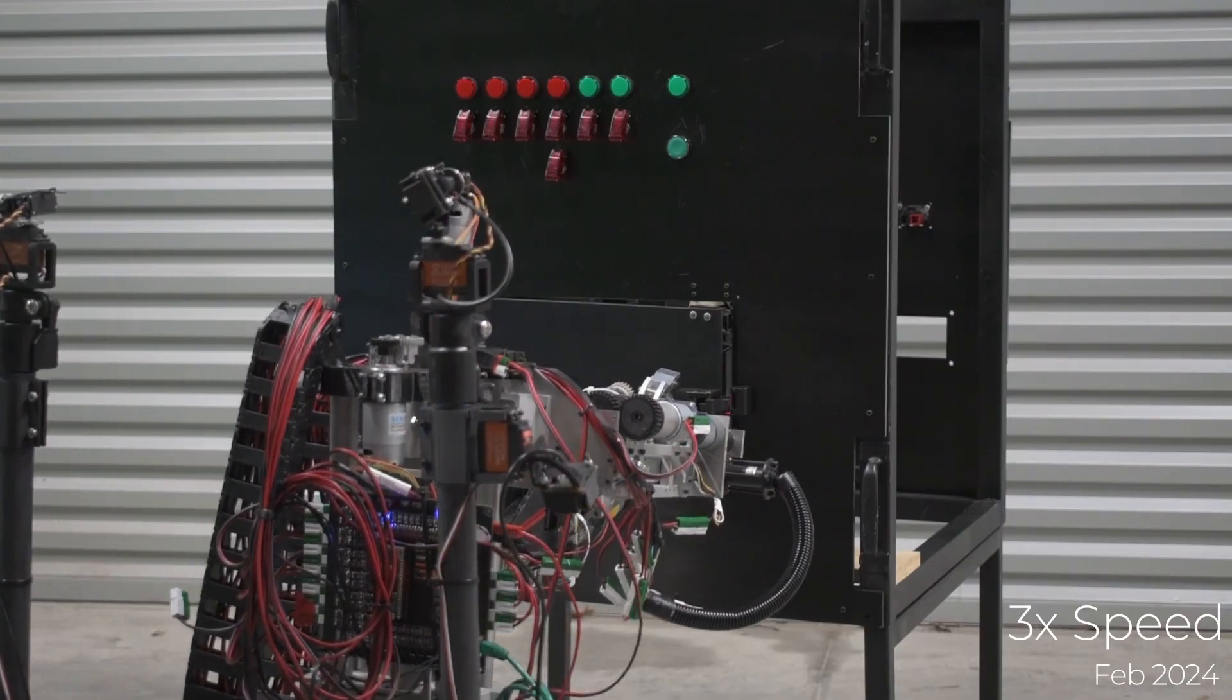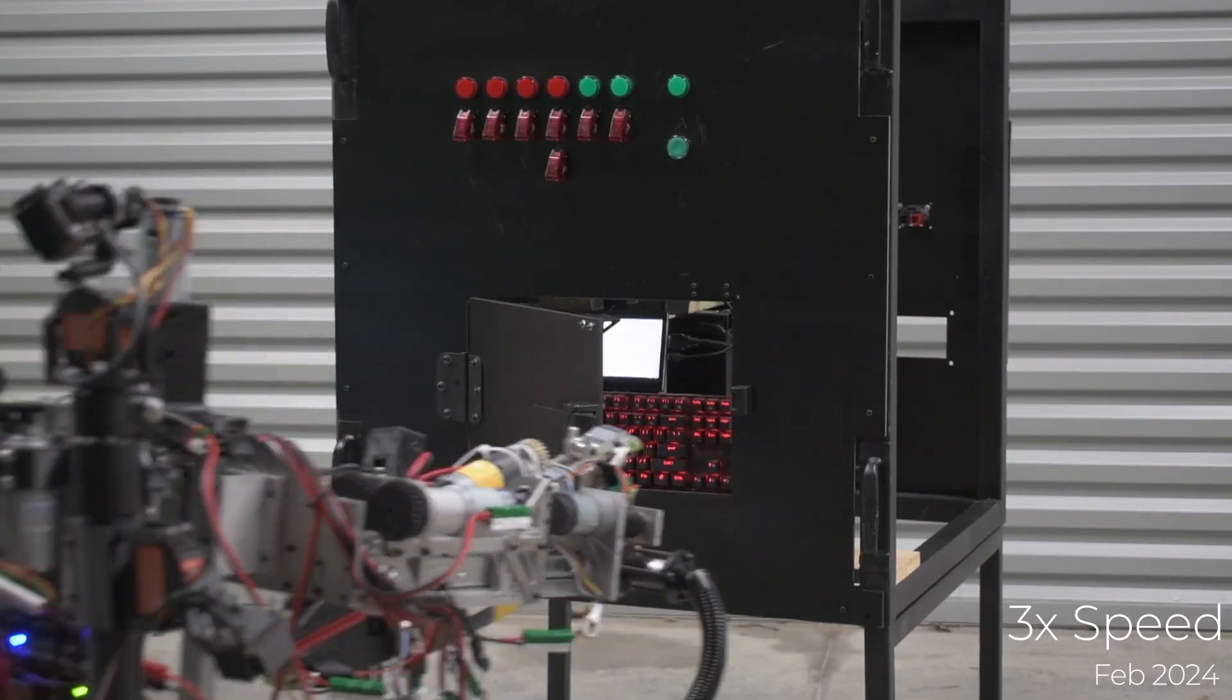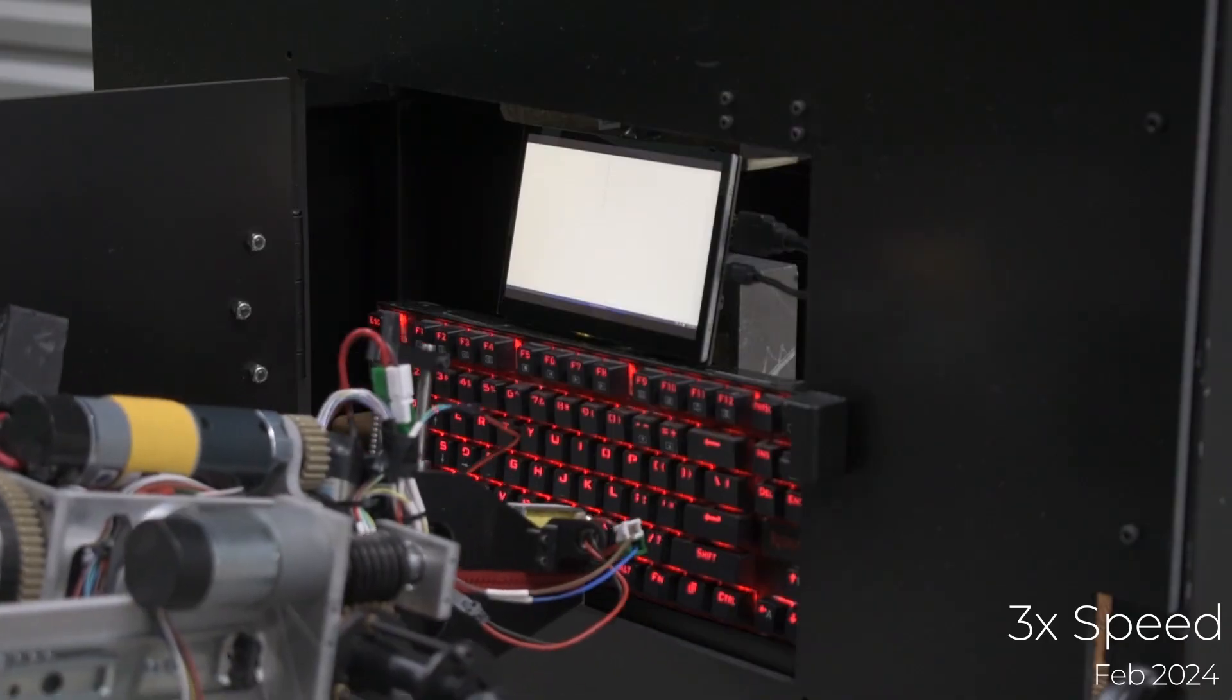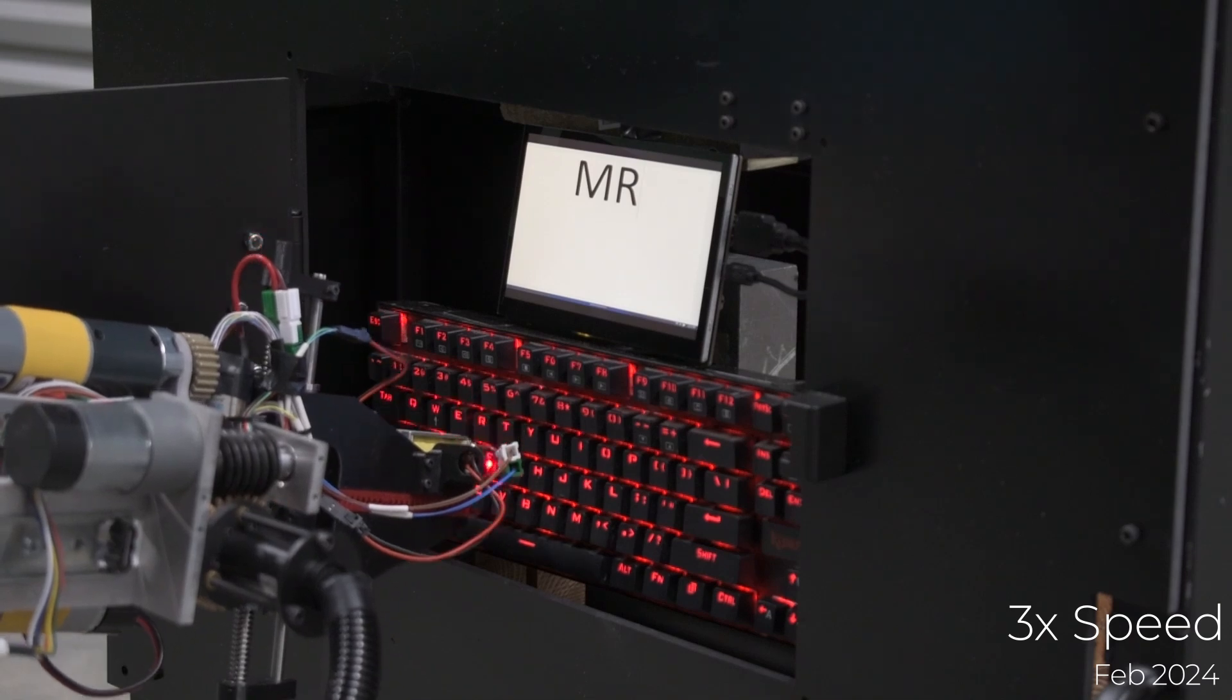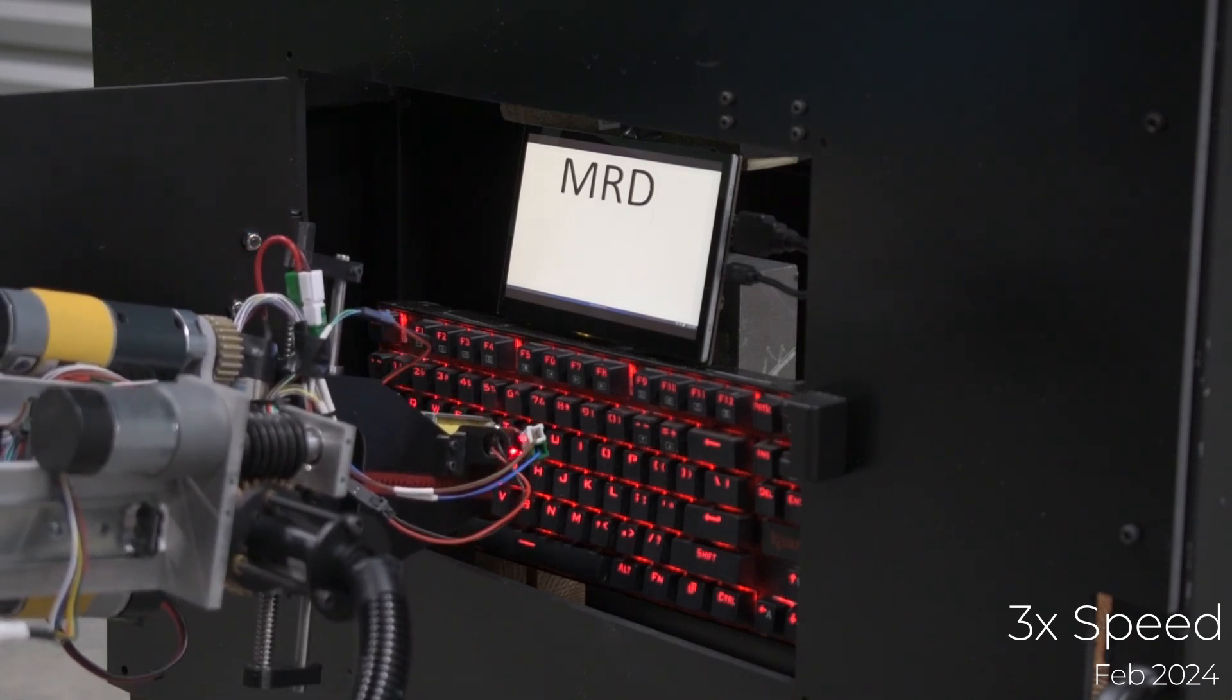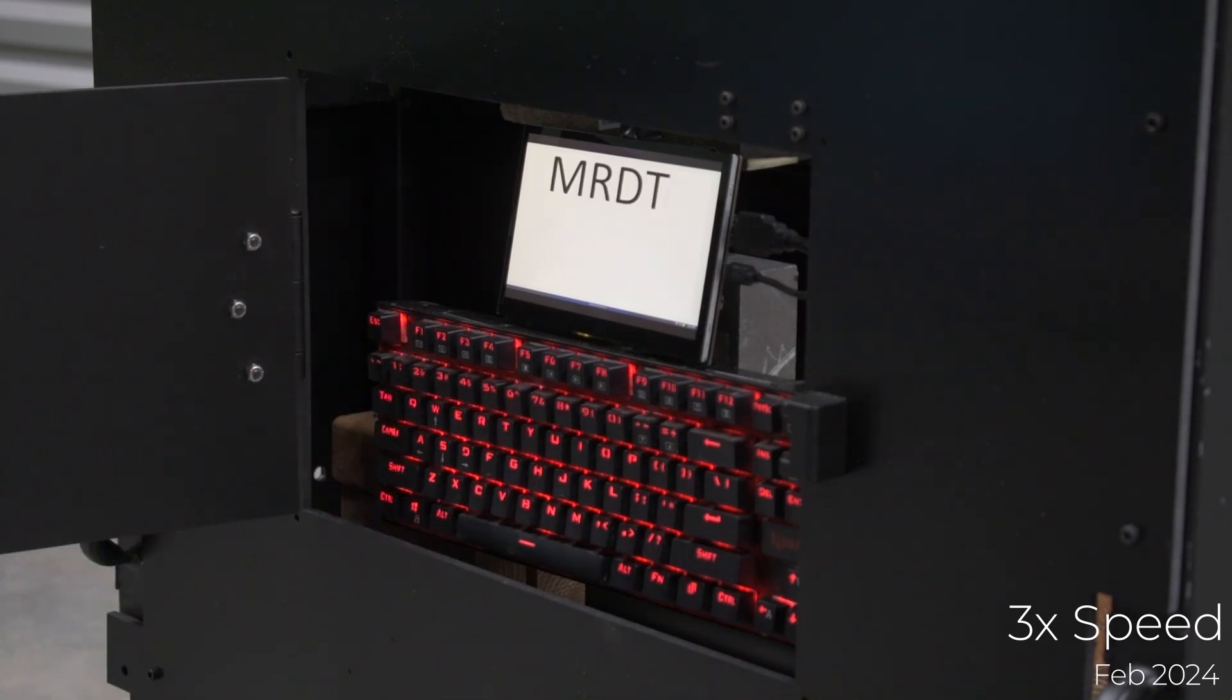The arm utilizes both absolute and quadrature encoder feedback for reliable closed-loop and five-dimensional inverse kinematic control. Limit switches at the end stops of each linear axis serve for startup calibration and as protective measures in case of encoder failure.